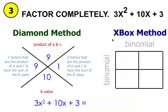Next, we're going to go ahead and make our two by two box to do the xbox method. So in this upper left corner, you're going to write the 3x squared term. In the lower right corner, you're going to write your c value, which is three.